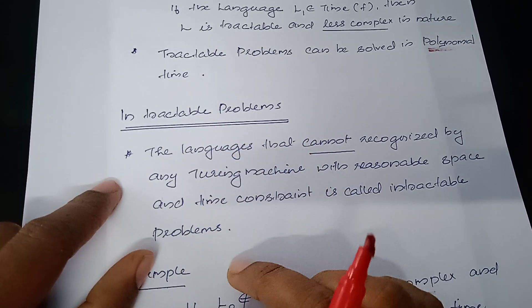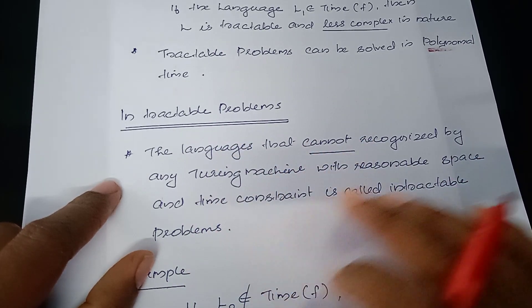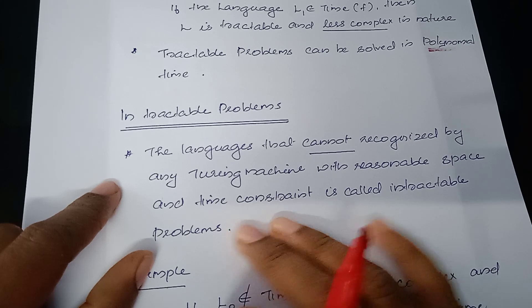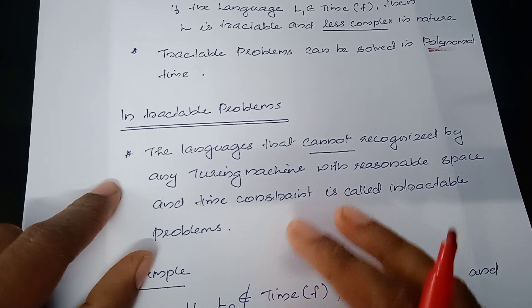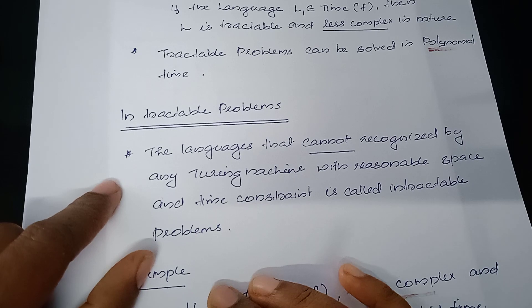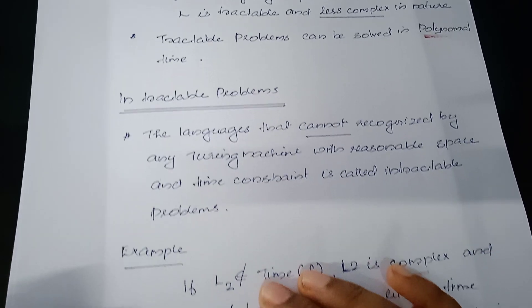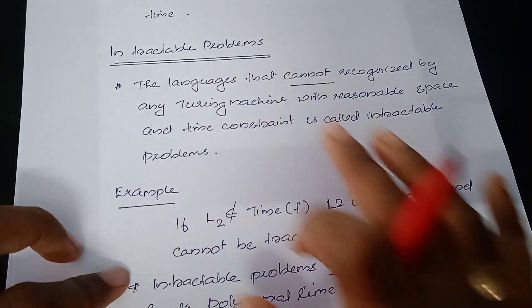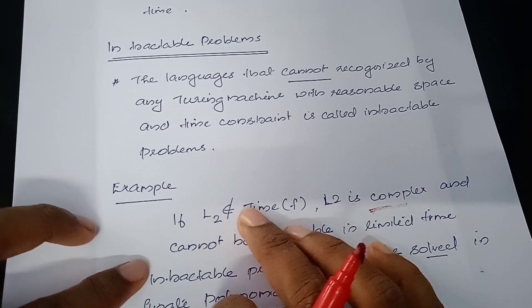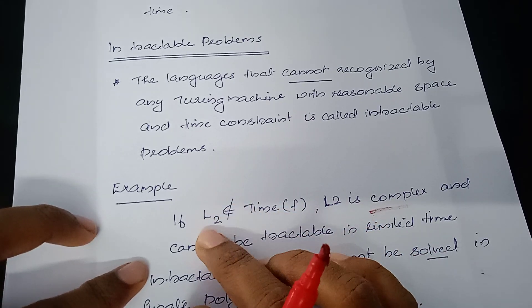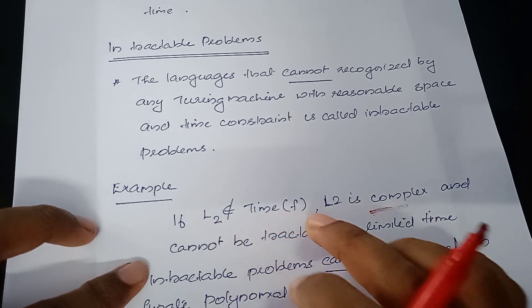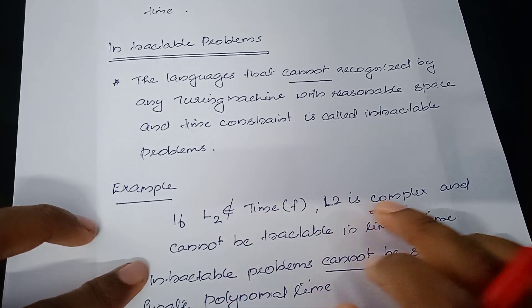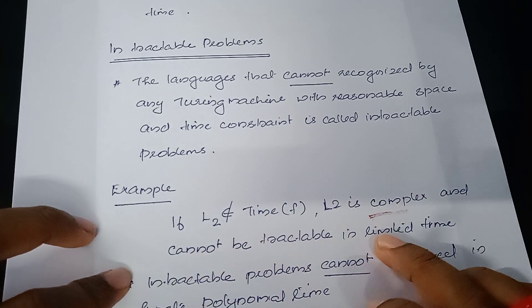Intractable problems are more complex. We cannot say how much time it will take to complete the problem, or how much storage space it will take to solve it. We cannot achieve a feasible solution for intractable problems. For example, if language L2 is not an element of finite time F, it is not solvable in finite time. L2 is complex and cannot be solved in limited time.